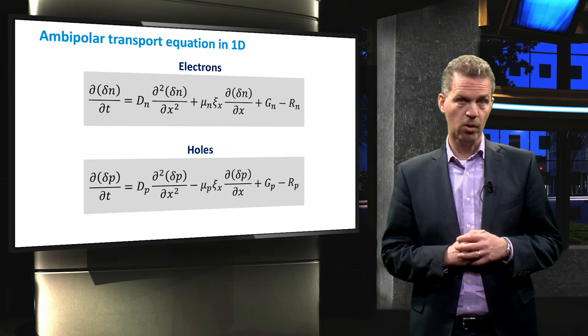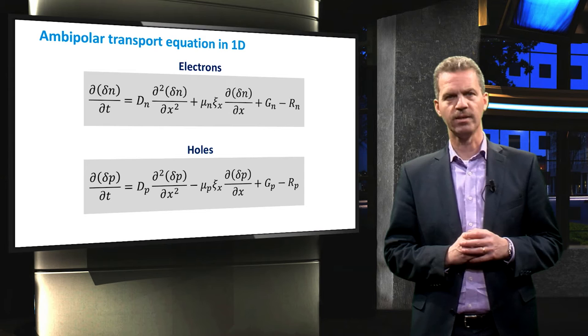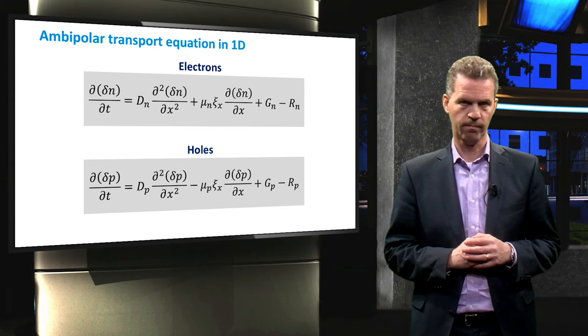The same derivation can be applied for holes, leading to more or less the same equation, except that the drift term is now negative. This is because of the opposite effect the electric field has on positively charged holes, compared to negatively charged electrons.